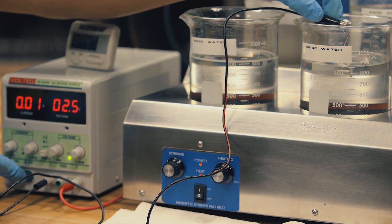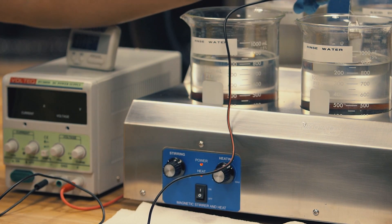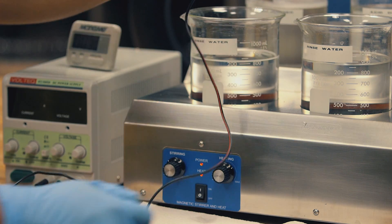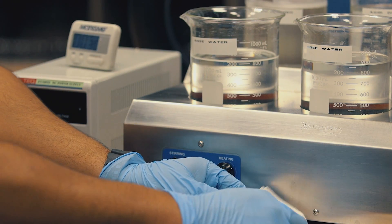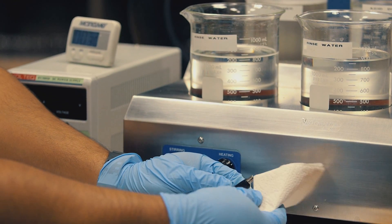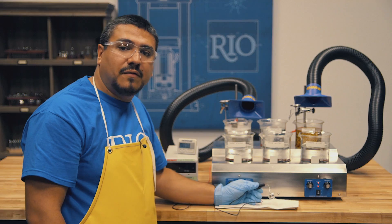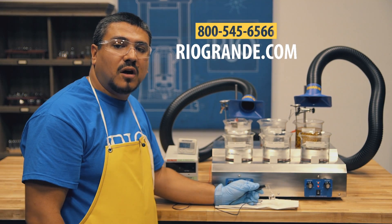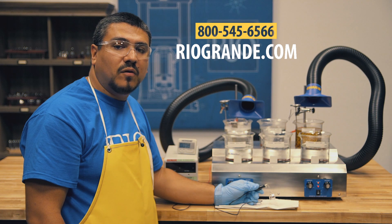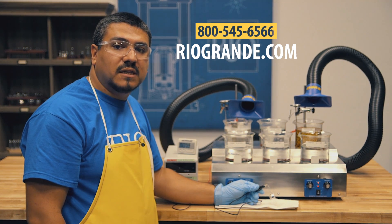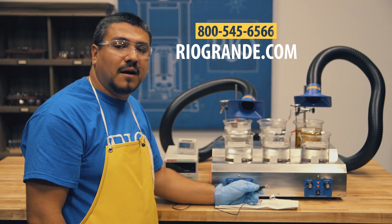You'll turn off your rectifier and pat or air dry. If you have further questions, give us a call at 1-800-545-6566 or visit us on the web at riogrande.com.